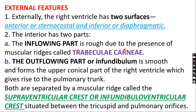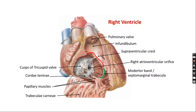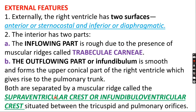The inflowing part is rough due to the presence of muscular ridges called trabeculae carneae, as you can see in the diagram. The outflowing part — otherwise known as the infundibulum — is smooth and forms the upper conical part of the right ventricle, which gives rise to the pulmonary trunk.